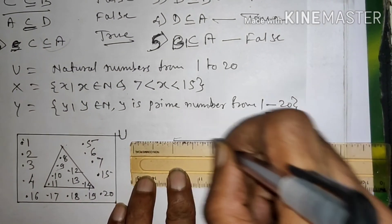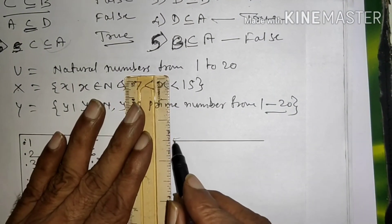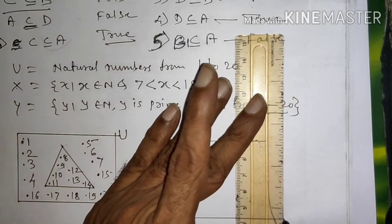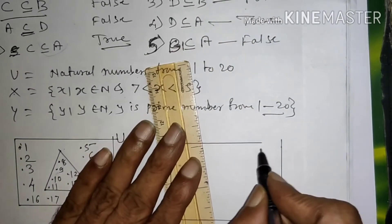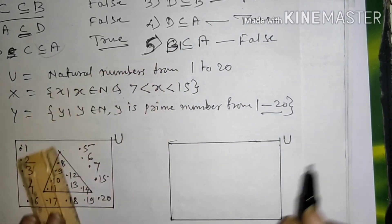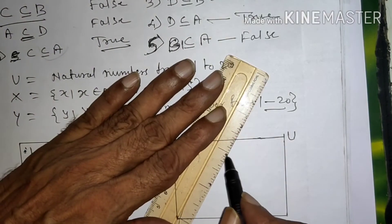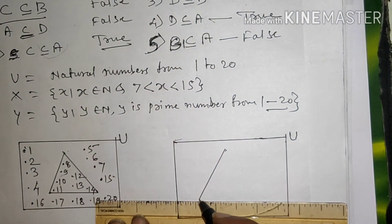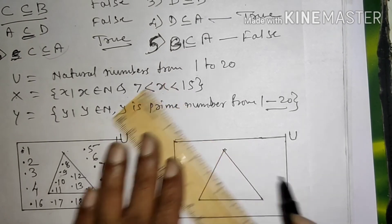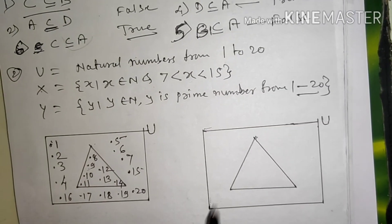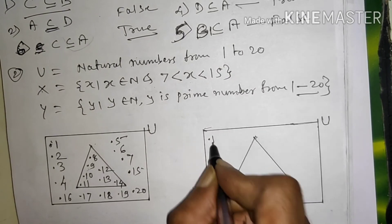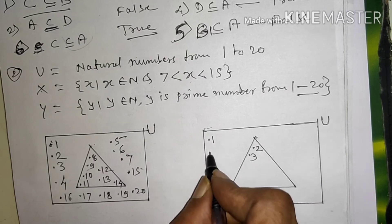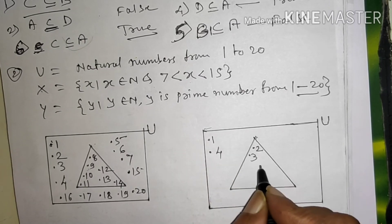Yeh triangle mein hoga se ab prime number wala. Yeh union set hai prime number. Ab 1 prime bhi nahi hai, vo 1 yahan aayega. 2 prime number hai, 3 prime number hai, 4 nahi hai, 5 prime number hai.